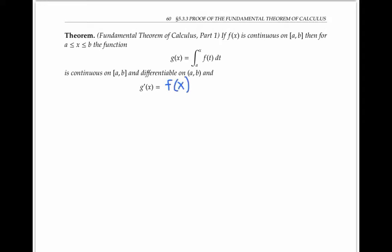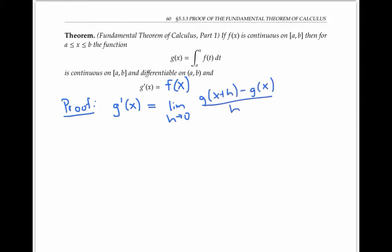To prove this theorem, let's start with the limit definition of derivative. The derivative g prime of x, by definition, is the limit as h goes to zero of g of x plus h minus g of x over h.